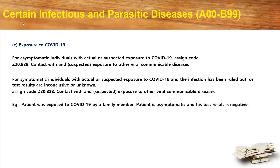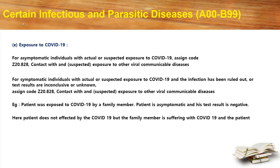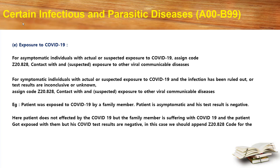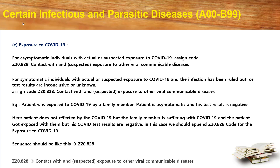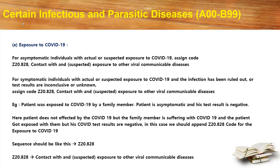Let's look at an example. A patient was exposed to COVID-19 by a family member. The patient is asymptomatic and his test result is negative. Here the patient was not affected by COVID-19, but the family member is suffering with COVID-19 and the patient was exposed to them, but his COVID test results are negative. In this case, we have to append code Z20.828 for exposure to COVID-19. Hence the sequence would be Z20.828, which is contact with and suspected exposure to other viral communicable diseases.